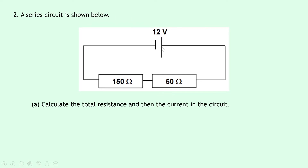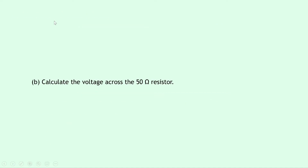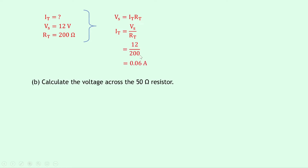Question two shows a series circuit with a 12 volt battery, a 150 ohm resistor, and a 50 ohm resistor in series. Label them R1 (150 ohms) and R2 (50 ohms). Part a asks for total resistance and current. RT equals R1 plus R2 equals 150 plus 50, which equals 200 ohms. Then IT equals VS over RT equals 12 over 200, which gives 0.06 amps.